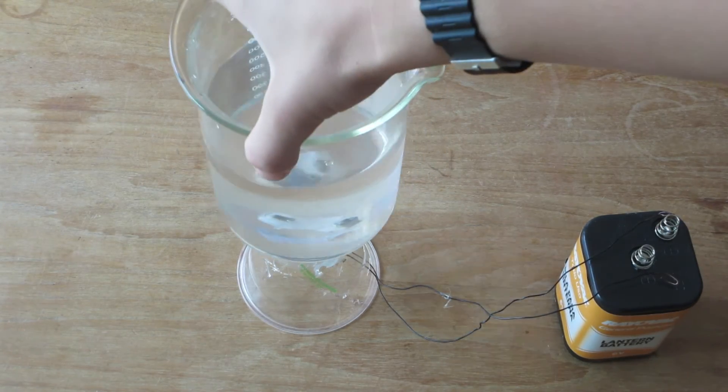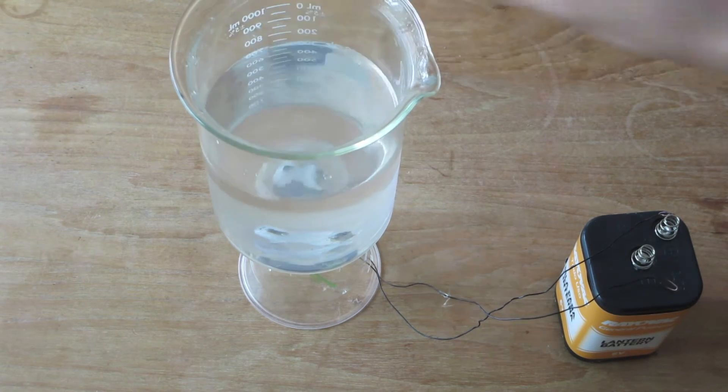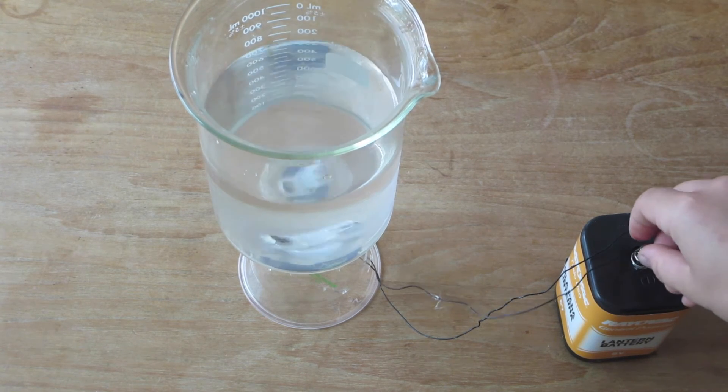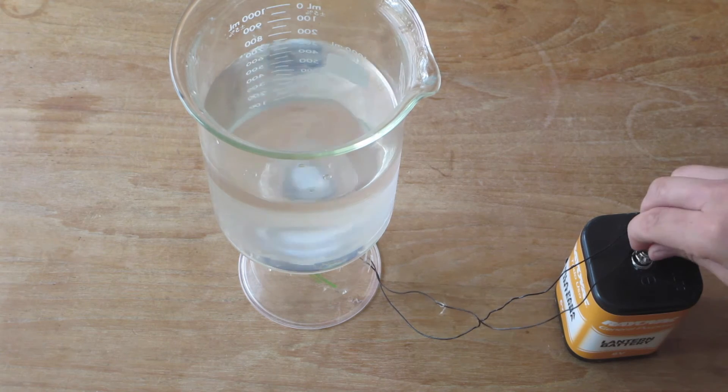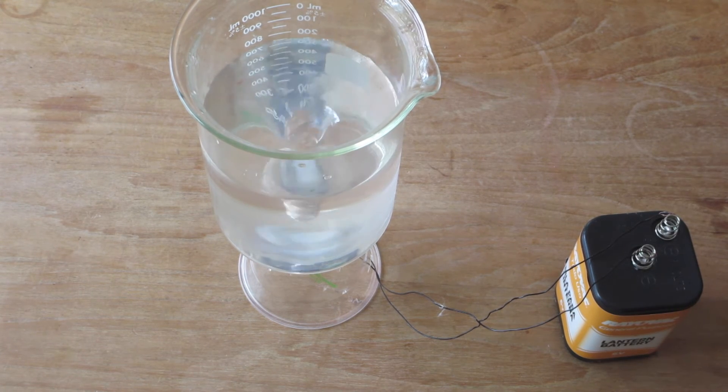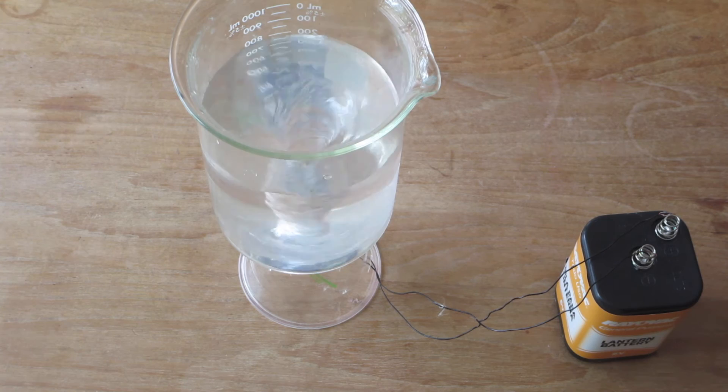When a beaker with a stir bar inside of it is placed onto the cup and the power turned on, the magnets inside the cup spin around. They're attracted to the magnets in the stir bar so that spins around with them.